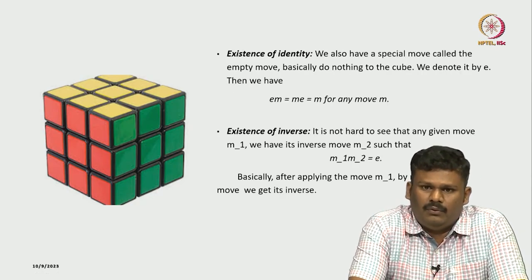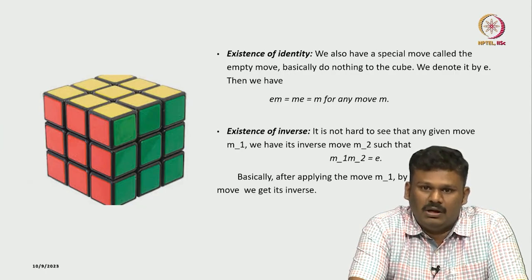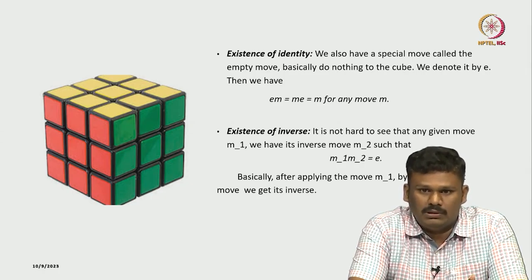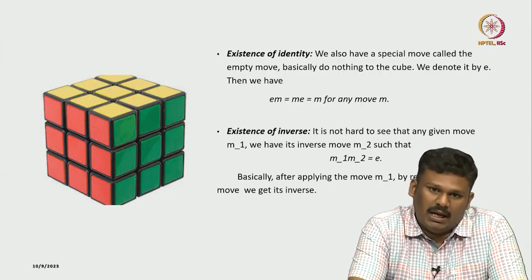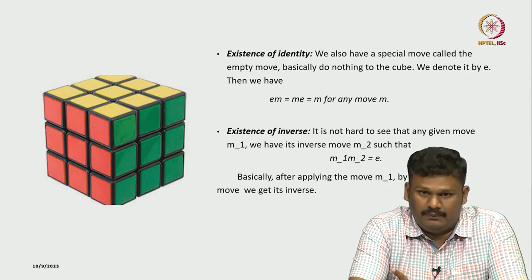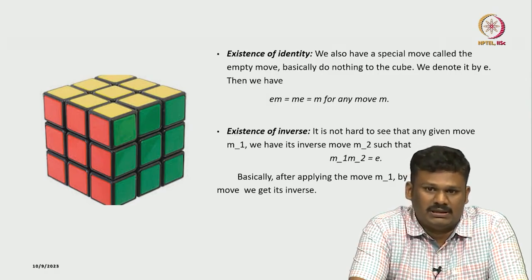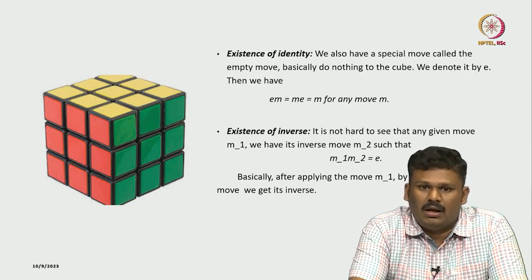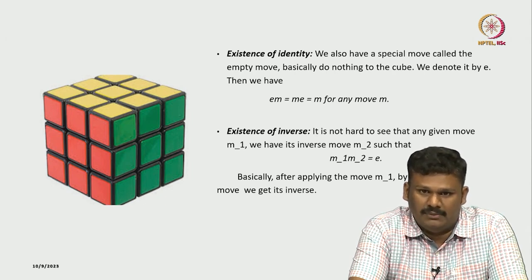There is one unique move called the empty move - we do nothing to the cube, but it is still a permissible move. If you apply that move E and then apply some other move M, it just amounts to applying M. Similarly, if you apply M and then apply E, it again amounts to applying M. So there is this unique move called the empty move that plays the role of the identity element: E·M = M·E = M.